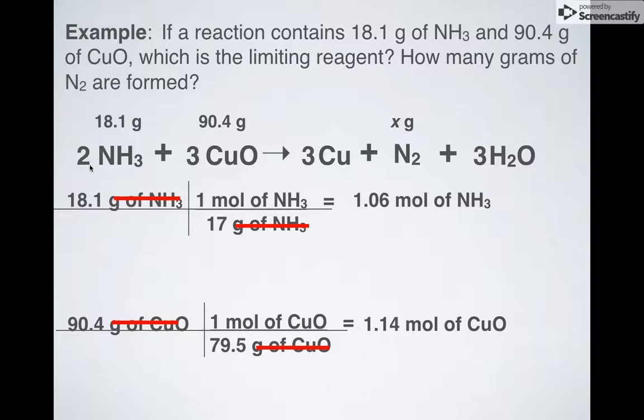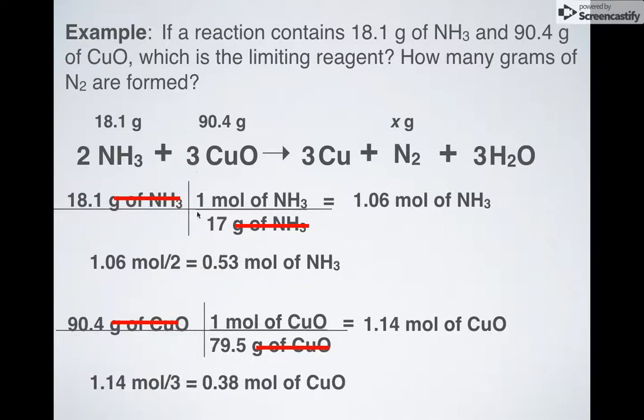Now here's the next part which gets a little weird. I now look at whatever coefficient is in front of my balanced equation and I divide these by those numbers. So this gets divided by 2 because there's a 2 in front. I get 0.53. This gets divided by 3, so 1.14 divided by 3 to get this and now I have my limiting reagent or limiting reactant, whichever one is smaller.